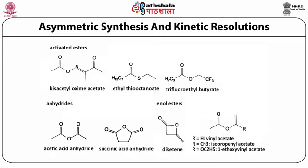Activated esters involve a better leaving group and show a more favorable equilibrium. Oxym esters, thioesters, and even anhydrides have been used with their respective merits and demerits. Enol esters such as vinyl esters are frequently employed — the product vinyl alcohol tautomerizes to acetaldehyde, which drives the reaction further. With some lipases however, the acetaldehyde produced results in enzyme inactivation, as those lipases have essential free amino groups for their activity which are modified by acetaldehyde.